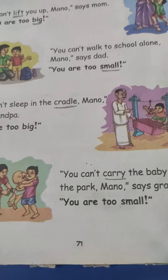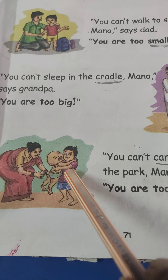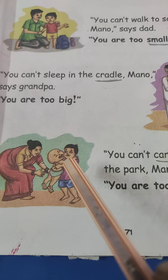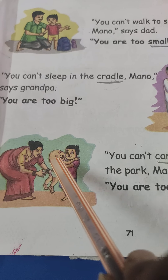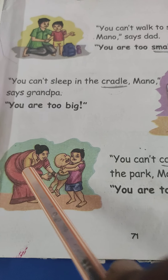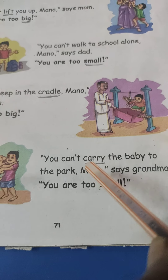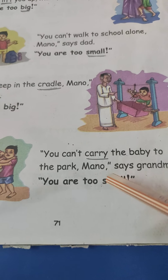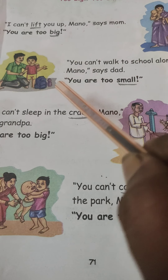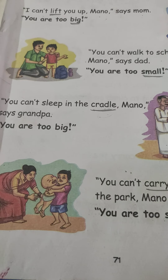Last one. You can't carry the baby to the park. Mano wants to carry the baby to the park, but it is not possible because this boy is also very small, not able to carry the baby to the park. So grandmother is saying: you can't carry the baby to the park. Mano says grandma, you are too small. These are the conversations between Mano and mother, Mano and father, Mano and grandfather, Mano and grandmother.